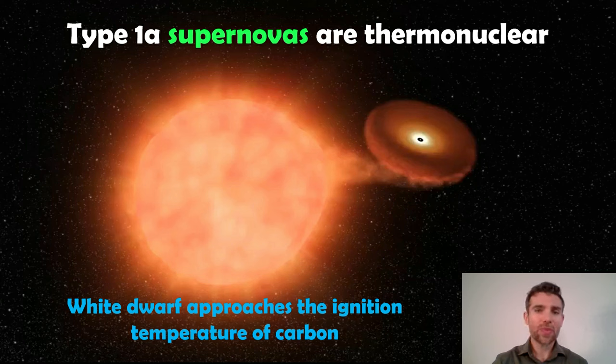A type 1a is when you've got a white dwarf star which is smaller compared to the actual red giant which is on the left here. It pulls material off the red giant, so these are in a binary system which means they're orbiting a common center of mass.